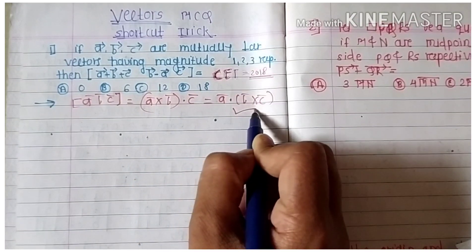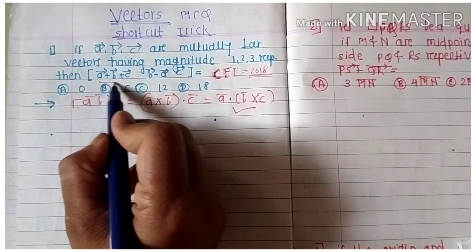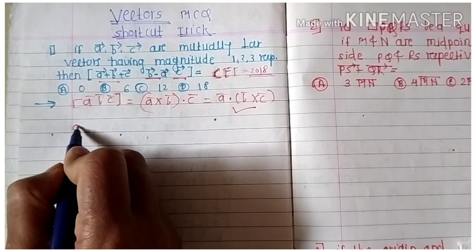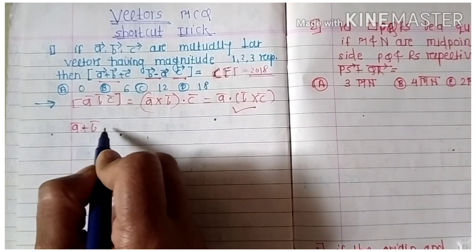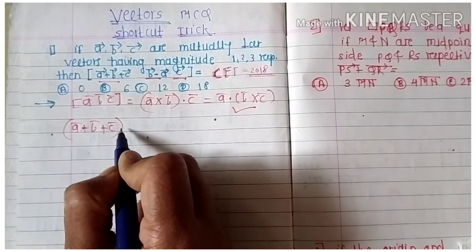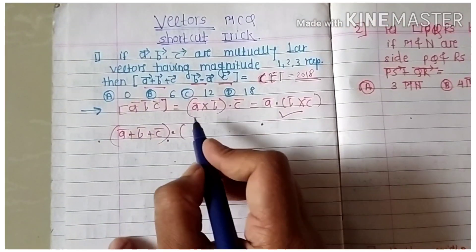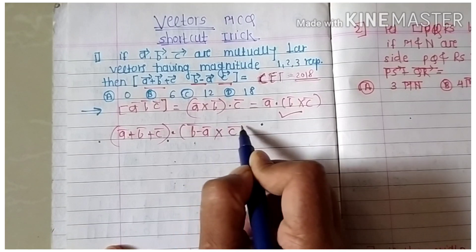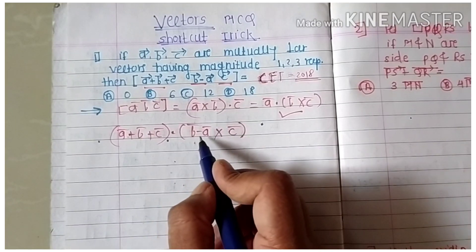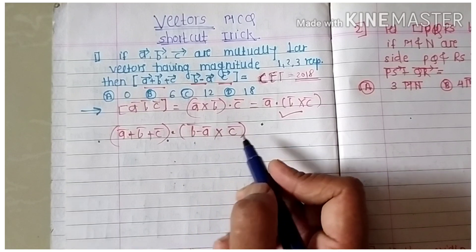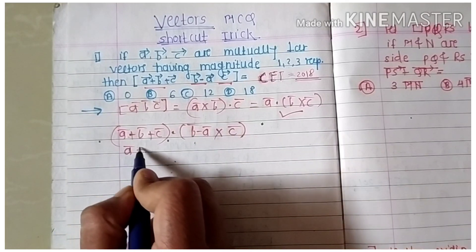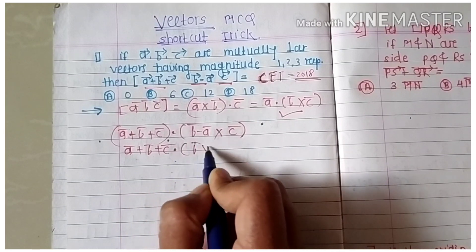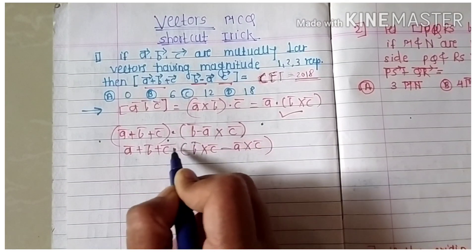We use this formula: ā means this value, b̄ means this value, and c̄ means this value. Therefore (ā + b̄ + c̄) · (b̄ × c̄), where b̄ is (b̄ − ā) cross c̄. Then we find b̄ cross b̄ minus ā cross c̄, giving us (ā + b̄ + c̄) · (b̄ × c̄ − ā × c̄).